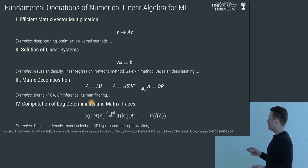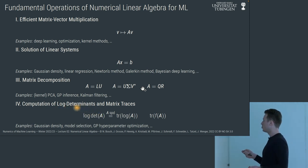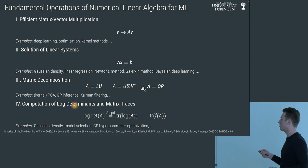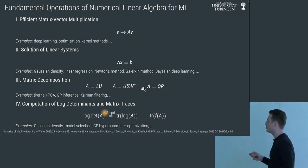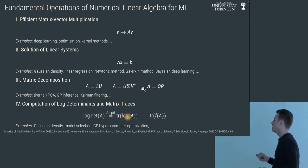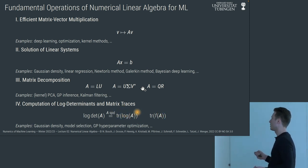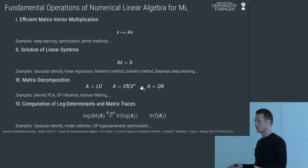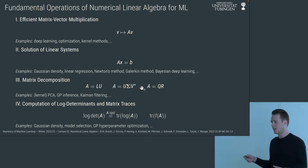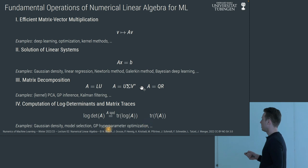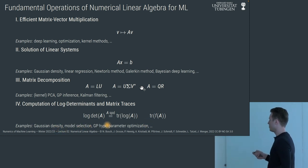Finally, specifically for the Gaussian density and GP regression, we need log determinants. For a symmetric positive definite matrix, the log determinant can be transformed into the trace of the matrix logarithm. More generally, it's sometimes interesting to estimate the trace of a matrix function — like a matrix exponential. We'll need this for GP hyperparameter optimization.